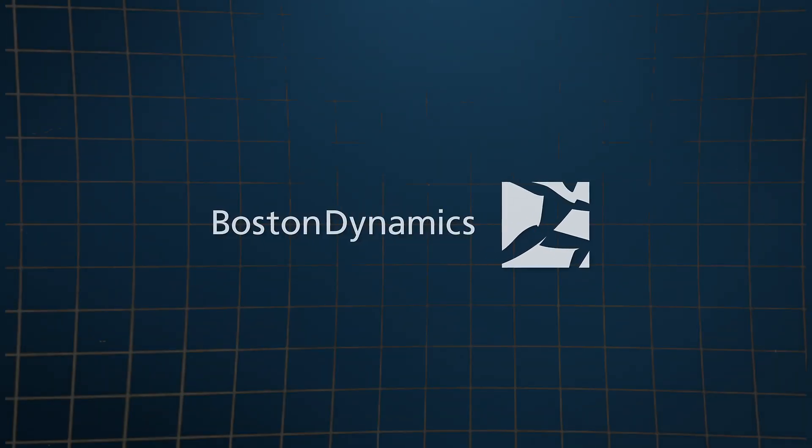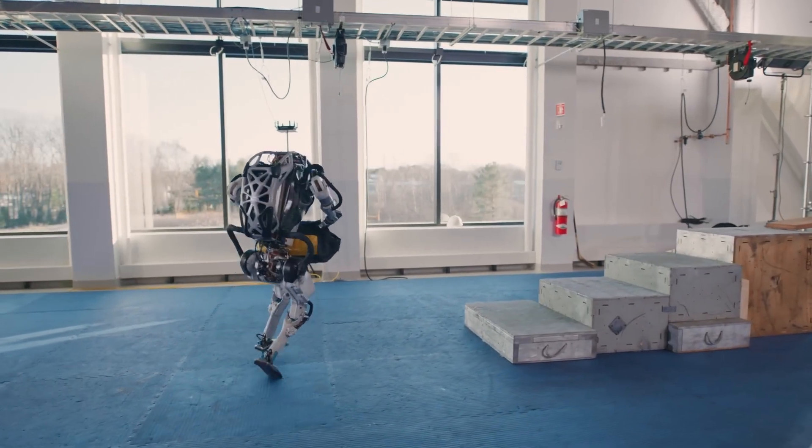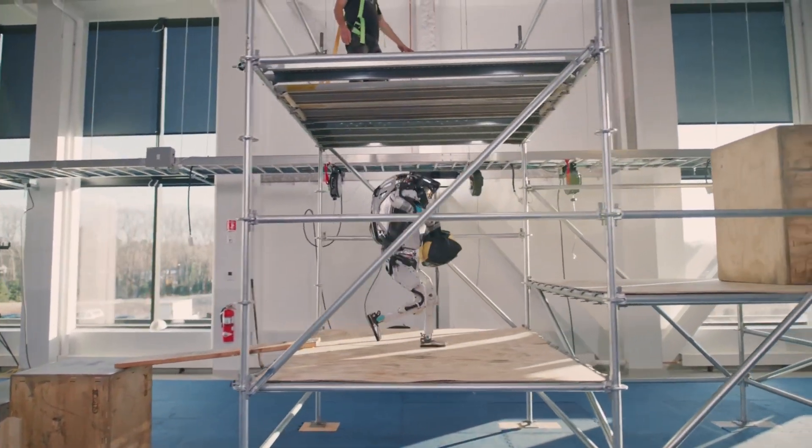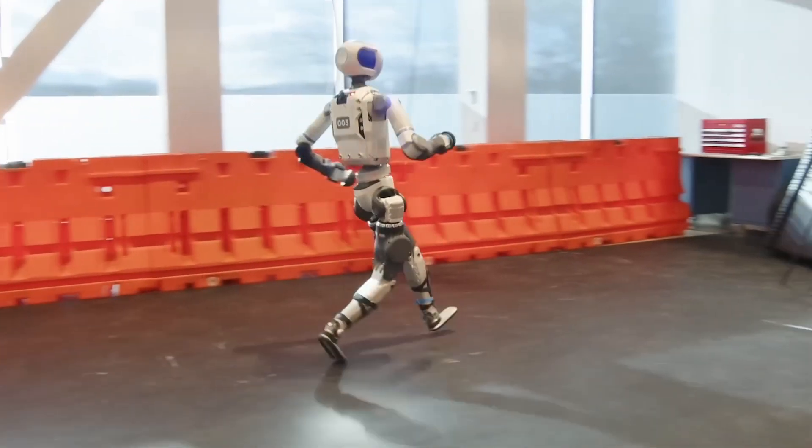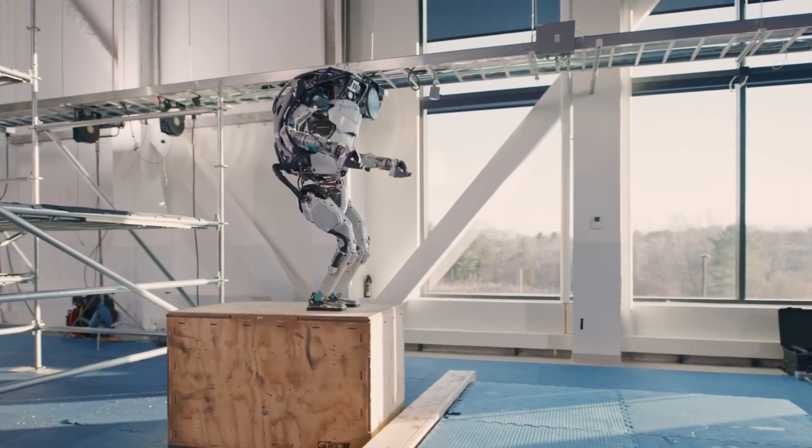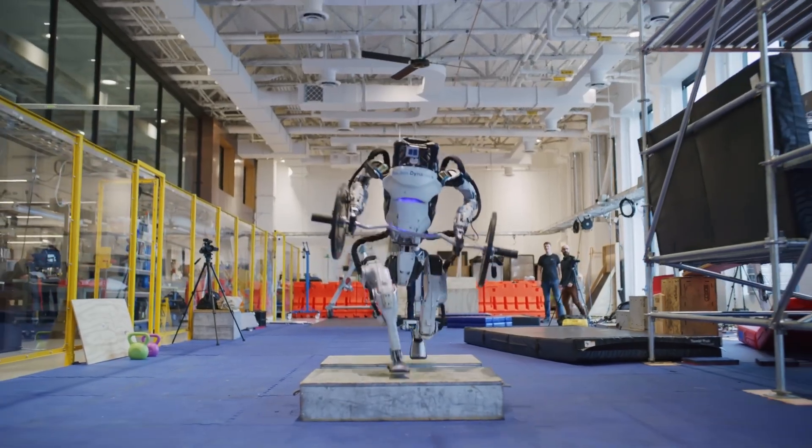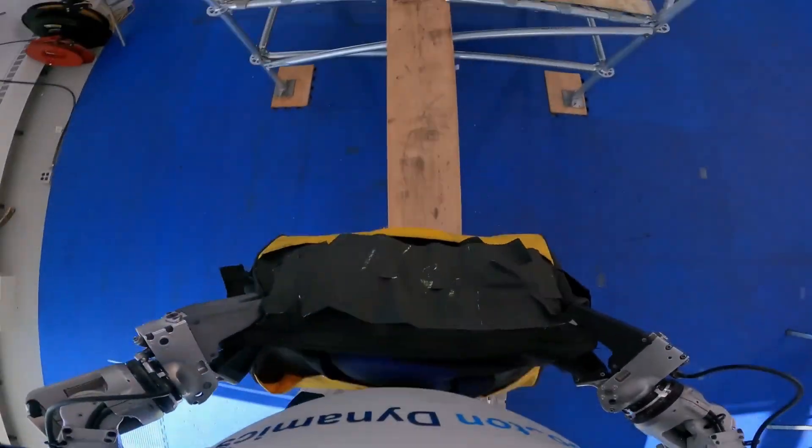Let's start with Boston Dynamics, because this one's quietly massive. Ever since the company switched Atlas from hydraulics to full electric, the entire focus has shifted from just movement to manipulation. They've already nailed balance, jumps, and recoveries. Now it's about what Atlas can actually do once it reaches an object.